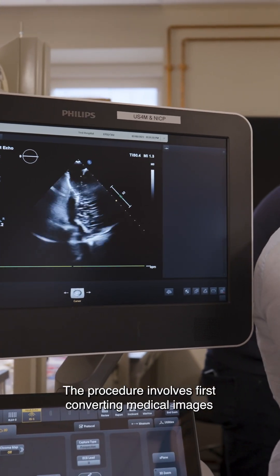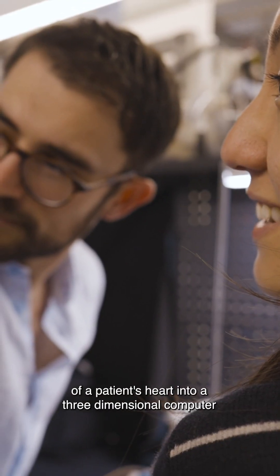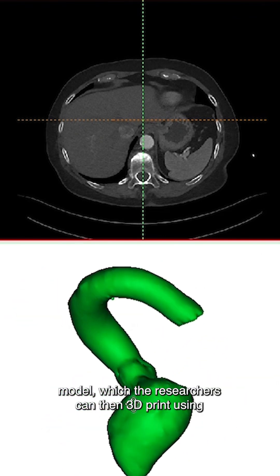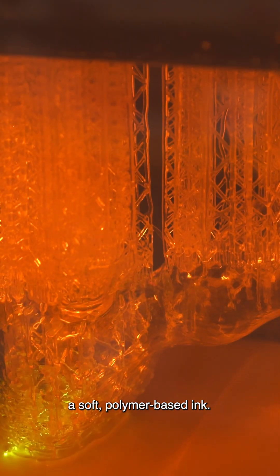The procedure involves first converting medical images of a patient's heart into a three-dimensional computer model, which the researchers can then 3D-print using a soft, polymer-based ink.